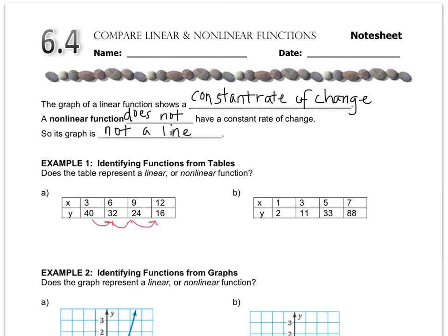So to go from 40 to 32, I subtracted 8. And then 32 to 24 is also a subtract 8. And 24 to 16 is also a subtract 8. So since I have the same relationship happening as I go down the table, this would be linear.